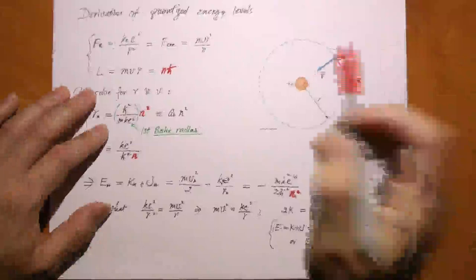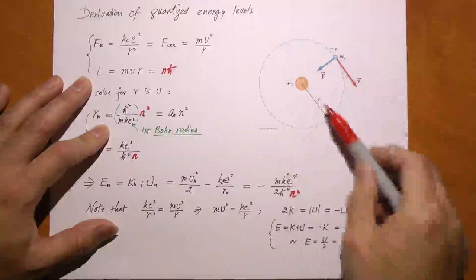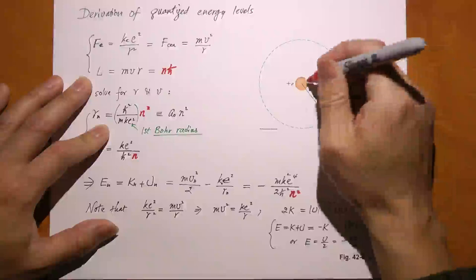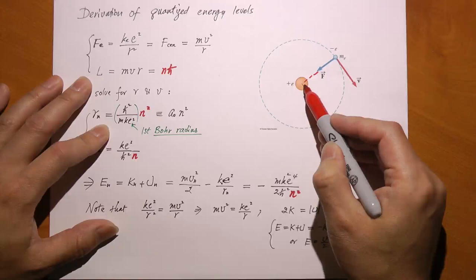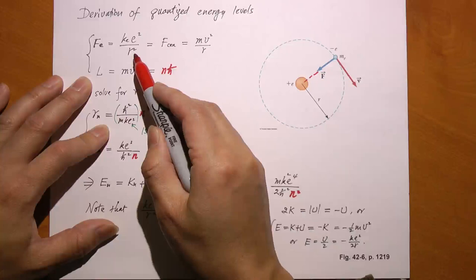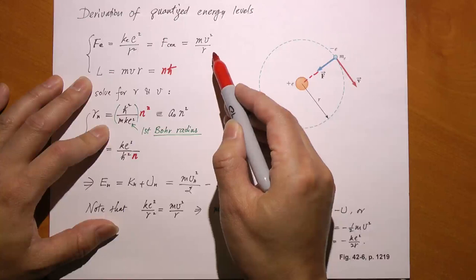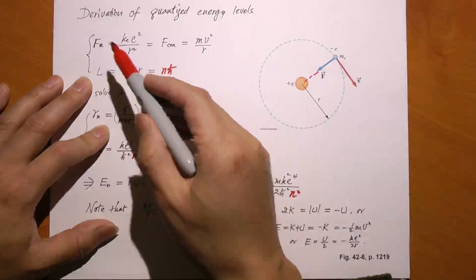We have a nucleus with positive charge e, and an electron with negative charge e going around it with radius r and speed v. The electric force of attraction is F = ke² / r², which is the Coulomb force. This Coulomb force points to the center of the circular motion, so it acts as the centripetal force, which is mv² / r. We equate the Coulomb force with the centripetal force—there is no quantum mechanics here yet.